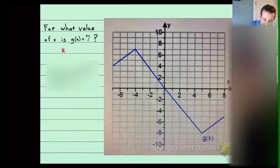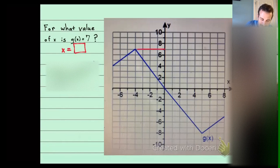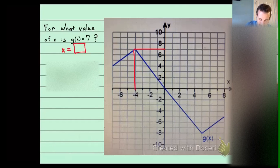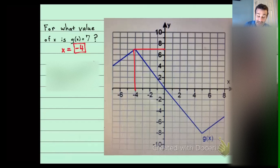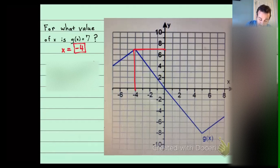So for what value of x is g of x equals seven? The answer is going to say x equals and you put in the answer. If y is seven, it's right there on the graph — what's the x value? Negative four. So g of x equals seven is telling me the y part is seven. Find seven on the y-axis, and tell me what the x part is — it's negative four.